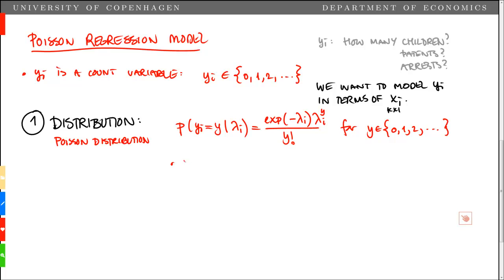Two things to note. First, the parameter lambda i, sometimes called intensity, is equal to the expected value of yi, and we condition on xi, and just note that this is 0 or positive.